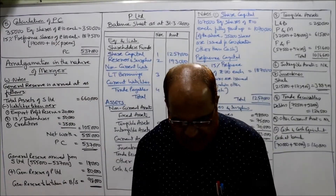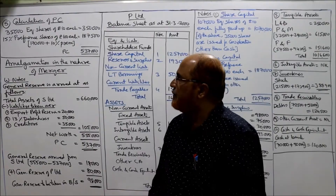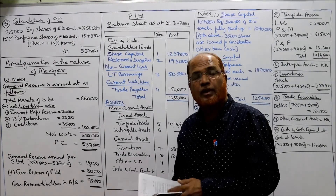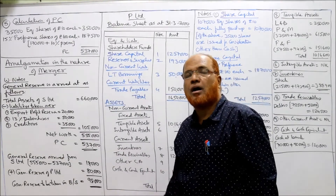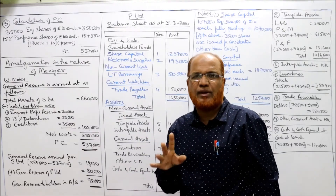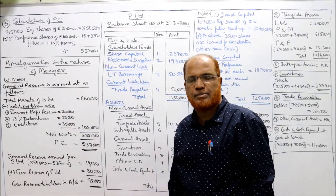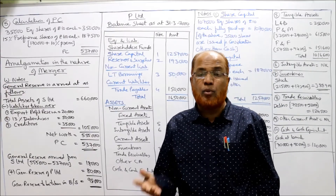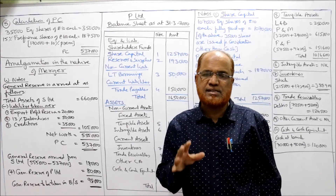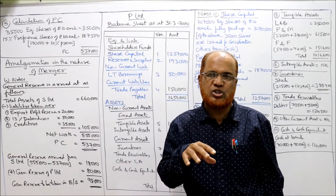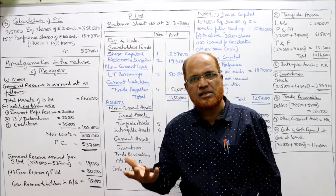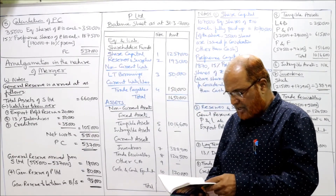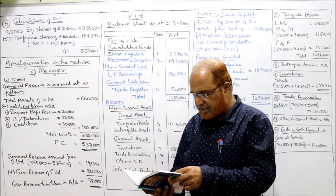Now we'll start Problem Number 5. Four problems we have already done, and most of the problems are on the merger method. Only one problem we have done on the purchase method. In this fifth problem, we are going to solve the same problem by both methods — merger method as well as purchase method.